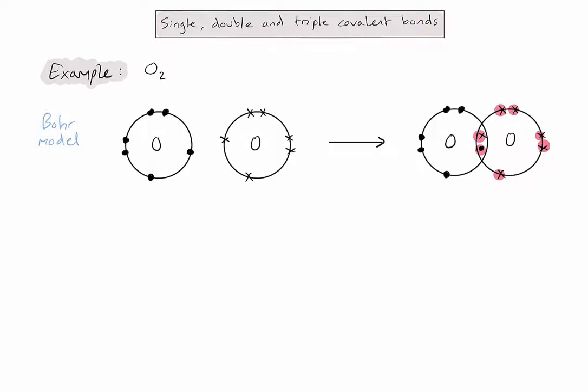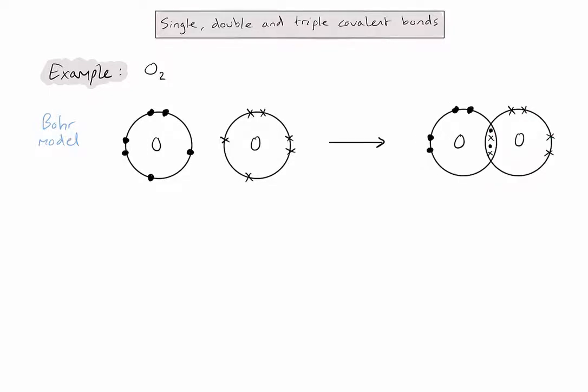So what we're going to do is we're going to redraw the diagram. But this time each oxygen atom is going to share two of its electrons. Now if I count those electrons again for the oxygen on the left, I've got 8 valence electrons. And the same for the atom on the right, 8 electrons.